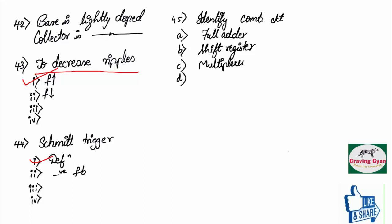We know, any sine wave can be converted into rectangular wave or square wave in the case of Schmitt trigger. As Schmitt trigger makes use of a negative feedback, false. Schmitt trigger always makes use of a positive feedback.